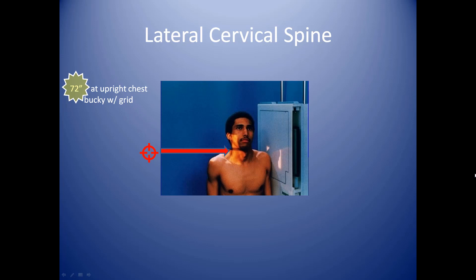For the lateral cervical spine, pull the camera back to 72 inches at the upright chest bucky with a grid. We pull back to 72 inches because of the distance between the tube and the patient's head — we can't avoid the shoulder being in the way. Pulling the camera in would create distorted angles that could be misleading, so 72 inches optimizes the anatomy to look appropriate. Center just above the adam's apple and below the chin, and include space just above the ears down to the tips of the shoulders.